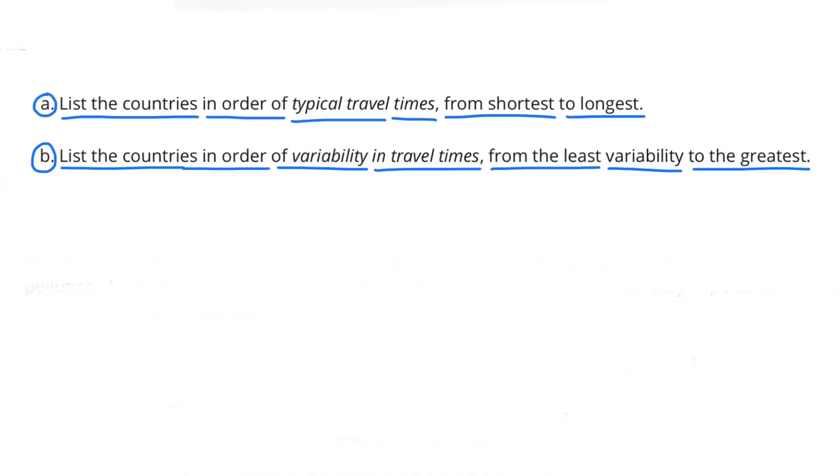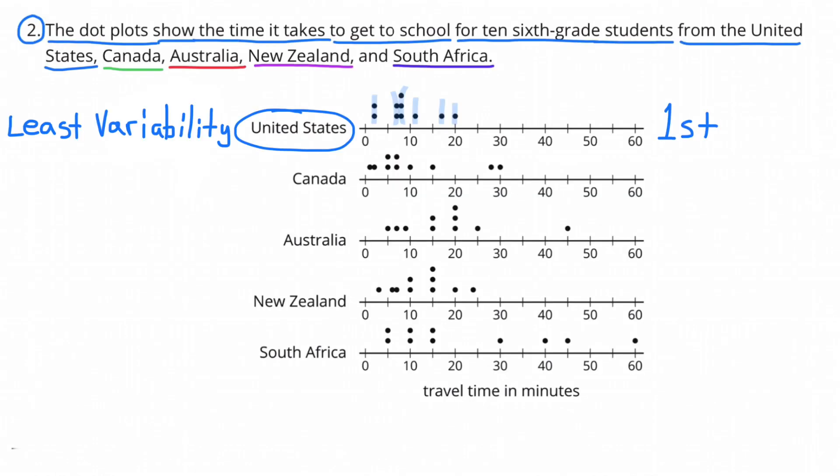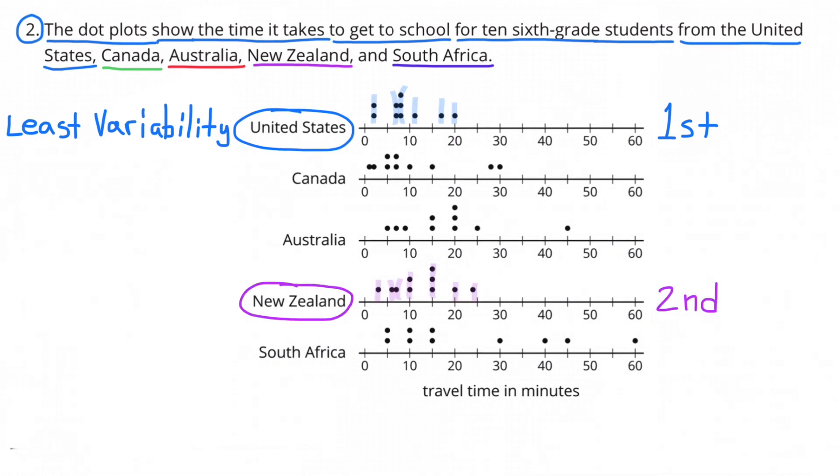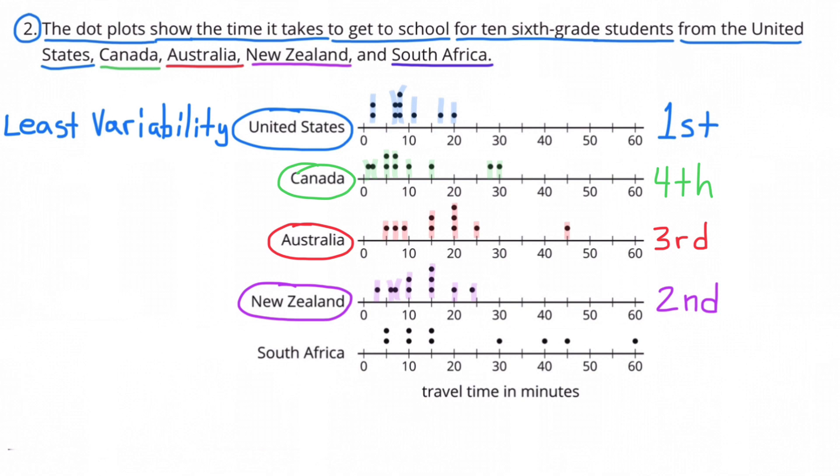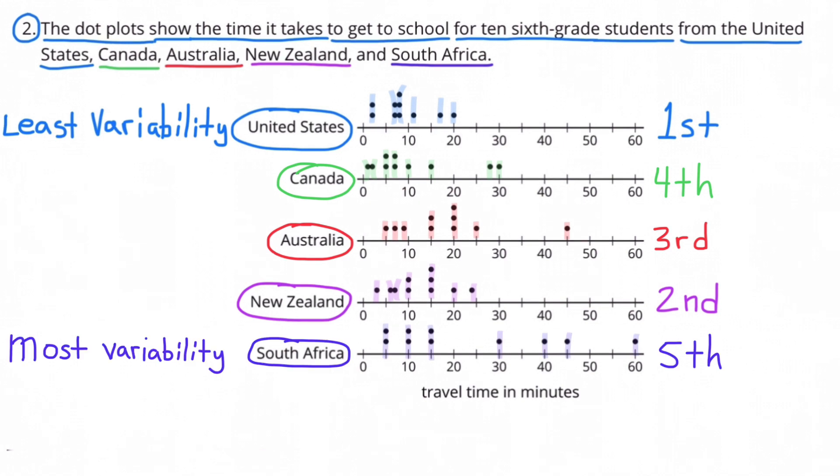B. List the countries in order of variability in travel times, from the least variability to the greatest. The least variability in travel times was the United States. Second would be New Zealand. Third would be Australia. Fourth would be Canada. And the most variability in travel times would be South Africa.